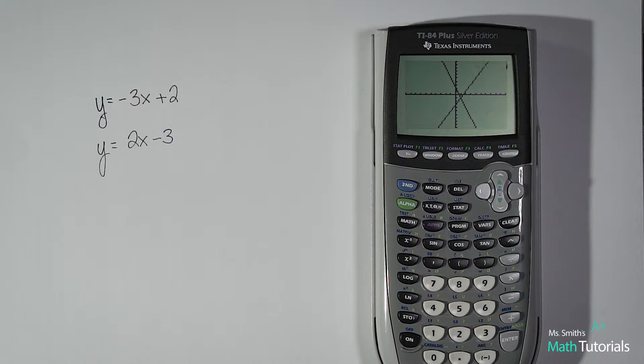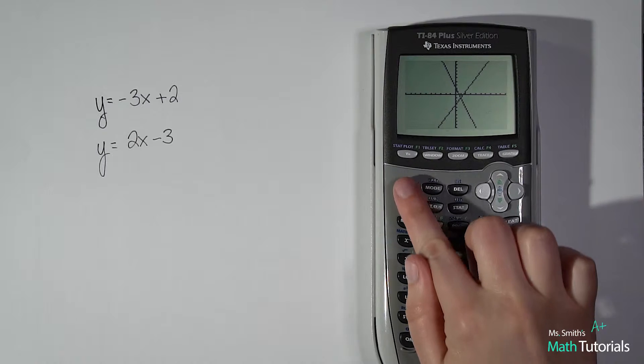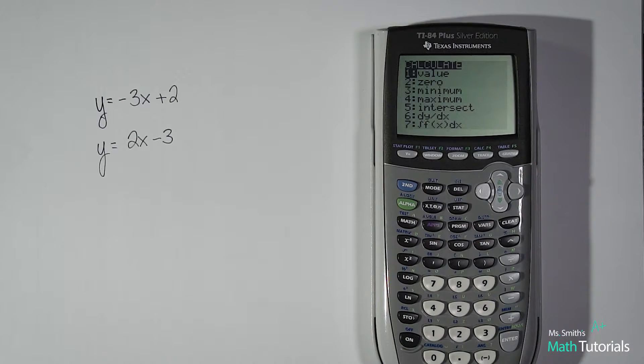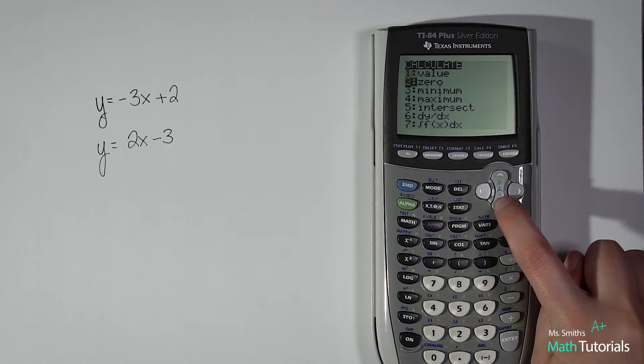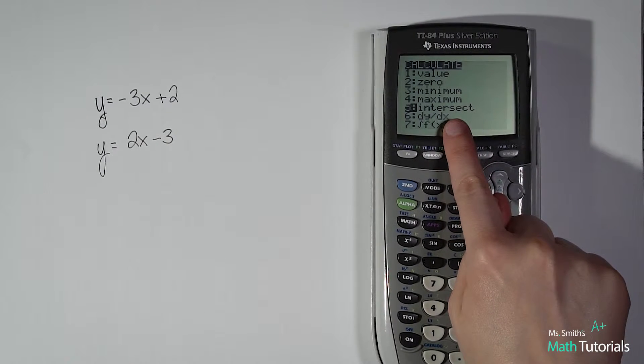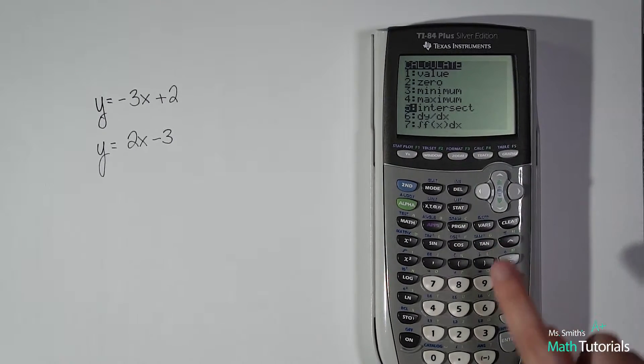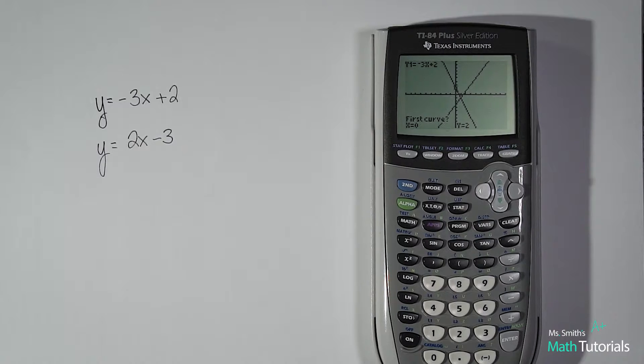So there are my two lines and I can see they have a very clear intersecting point and I want to know what that point is. So in order to figure out what that exact point is you hit second trace and I want to go all the way down to intersect. Now you can either scroll down and hit enter or you could just hit 5 for intersect.